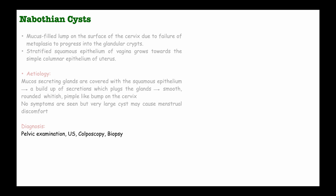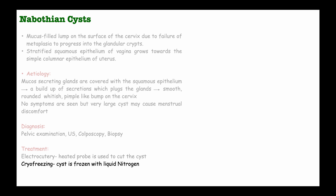Treatment of Nabothian cysts is by electrocautery and cryo-freezing. With electrocautery, a heated probe is applied to cut off the cyst. With cryo-freezing, the cyst is frozen with liquid nitrogen.